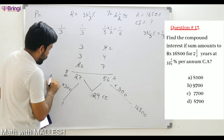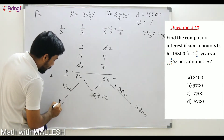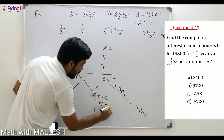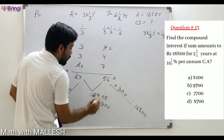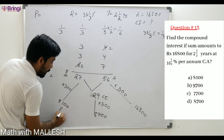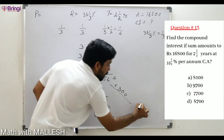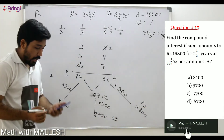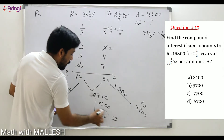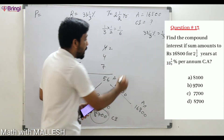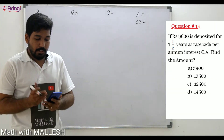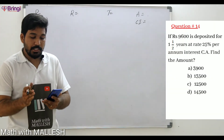So multiply every value by 300. Principal: 27 × 300 = 8100. Compound interest: 29 × 300 = 8700. Amount: 56 × 300 = 16800. According to the question, find the compound interest — 8700. Option D.